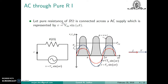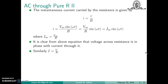Let us consider that a pure resistance of R ohms is connected across the AC supply represented by V = Vm sin(ωt). According to Ohm's law, the instantaneous current is equal to instantaneous voltage divided by resistance. Since V = Vm sin(ωt), the current is i = (Vm/R) sin(ωt) = Im sin(ωt), where Im = Vm/R.